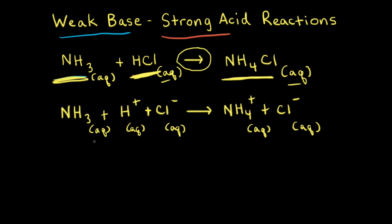I've drawn in the aqueous subscripts and also put in the reaction arrow and a plus sign. This represents the overall or complete ionic equation, which we can use to find the net ionic equation for this weak base–strong acid reaction.